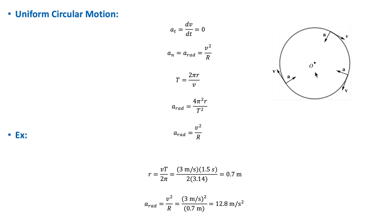Both v and a are changing continuously in direction, but their magnitudes are constant. The time required for the particle to complete one revolution around the circle is known as the period of revolution and is given by 2πr over v. The radial component can also be expressed as 4π²r over T².